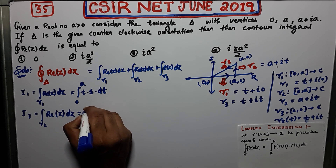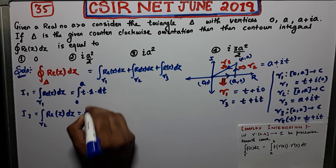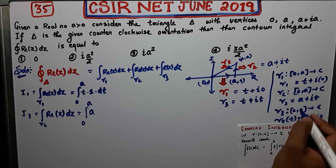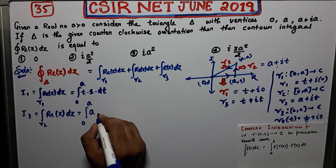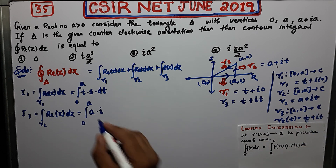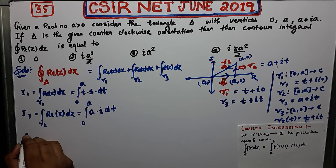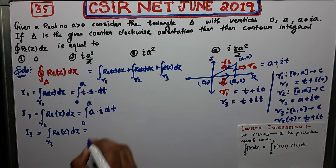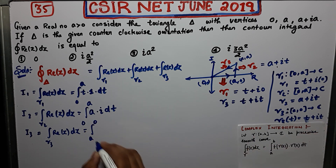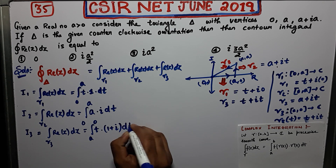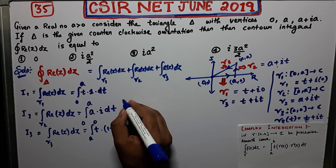I2: gamma 2 goes from 0 to a, the real part of gamma 2(t) = a + it is a, and gamma 2'(t) = i. So I2 = integral from 0 to a of a · i dt. For I3: gamma 3 goes from a to 0. The real part of gamma 3(t) = t + it is t, and gamma 3'(t) = 1 + i. So I3 = integral from a to 0 of t · (1 + i) dt.